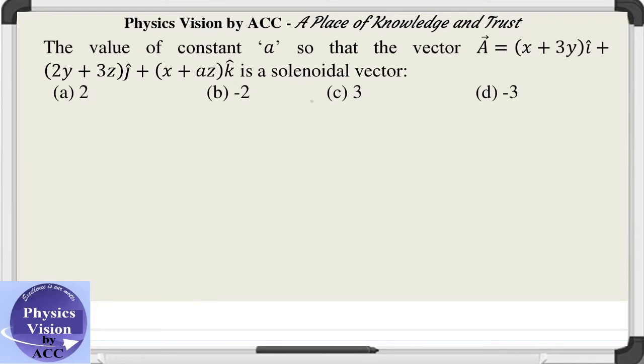Welcome back, dear students. The given question is: find the value of constant 'a' so that this vector is a solenoidal vector. As we know, a vector is said to be solenoidal if its divergence is zero.